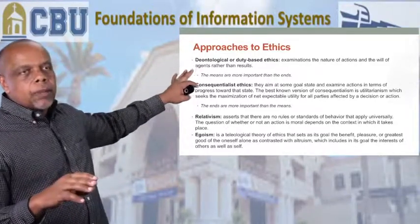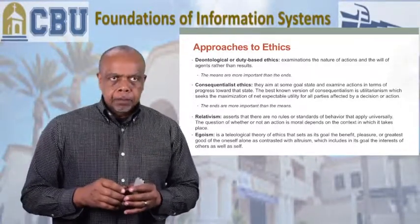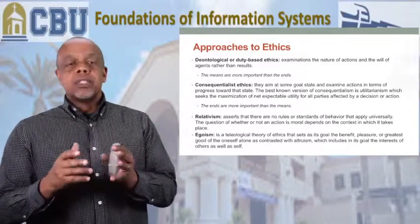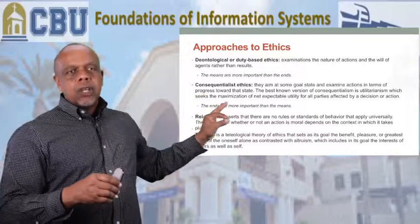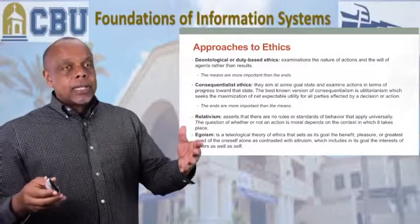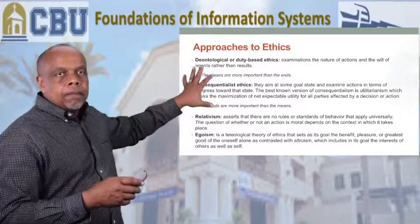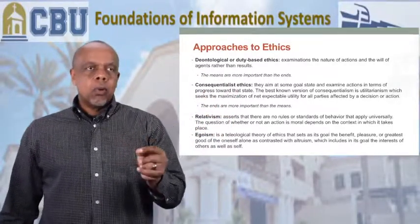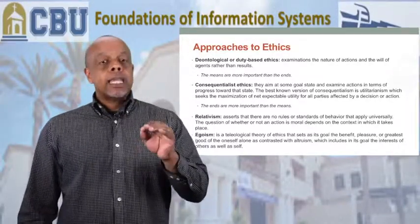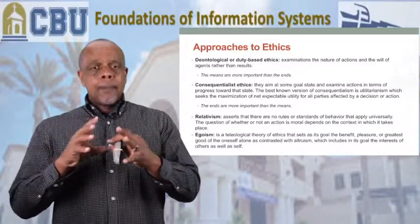The first one we're going to talk about is the deontological, or duty-based, ethics. That's where we examine the nature of actions and the will of the agents rather than the results. What that really comes down to is the means are more important than the end. On the flip side, 180 degrees out, is what we call the consequentialist ethics approach — where the end is more important than the means. It doesn't matter how we got to this point; we're making money, so it's okay. Those two are diametrically opposed.